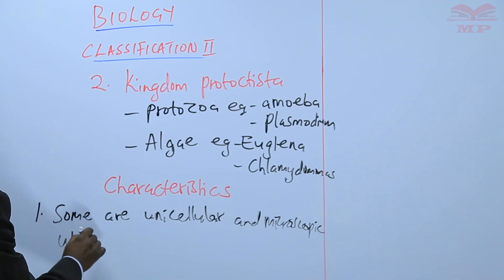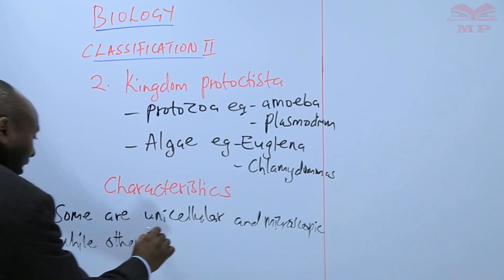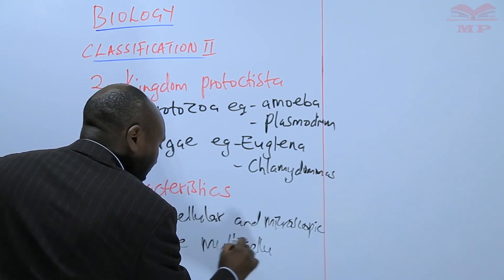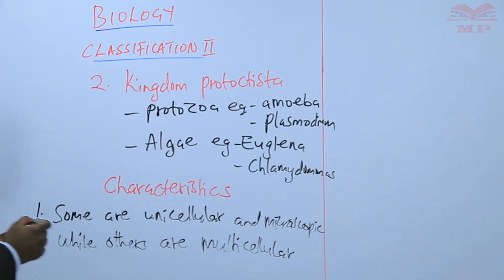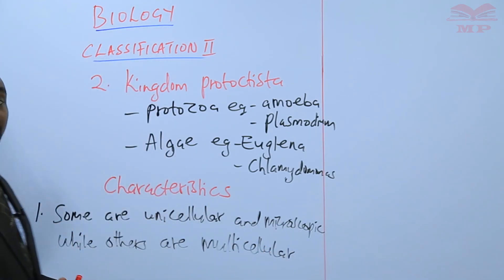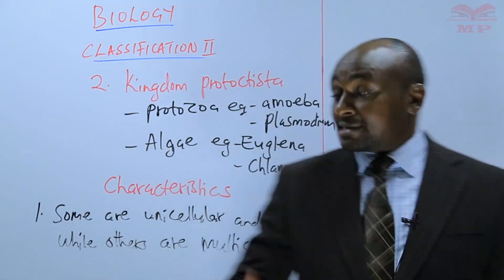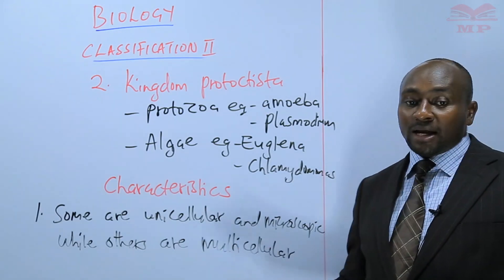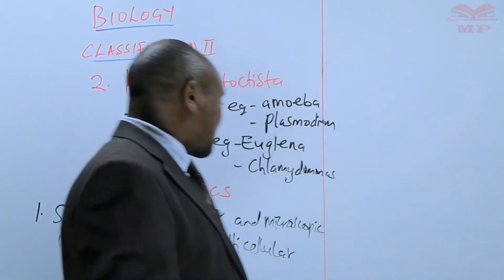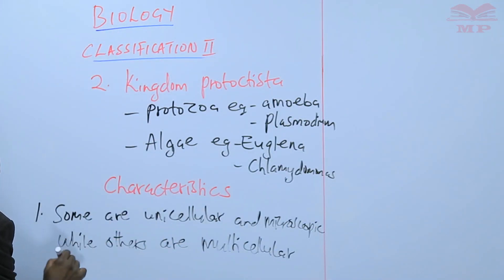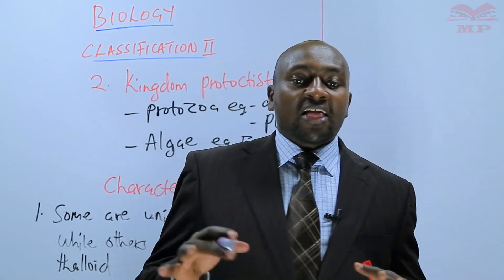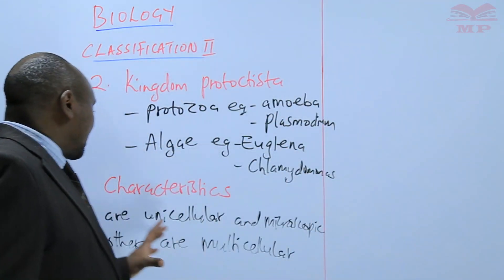While others are multicellular — that means they have multiple cells or many cells. We can say multicellular thaloid. Thaloid means undifferentiated, so they have many cells that are not differentiated. That is the first characteristic.